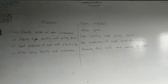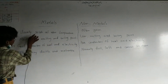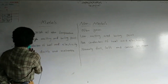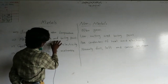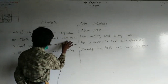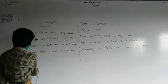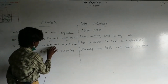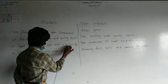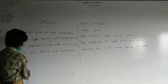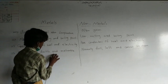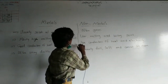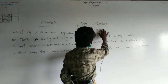Metals usually are solids at room temperature, mostly with high melting and boiling points, good conductors of heat and electricity, often shiny, ductile and malleable.